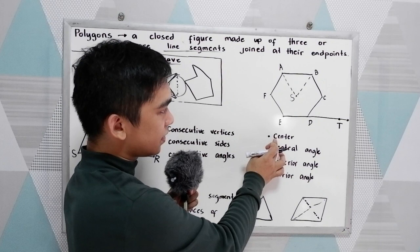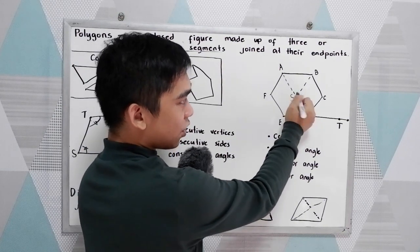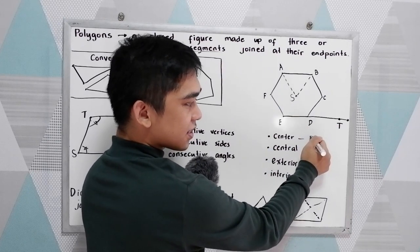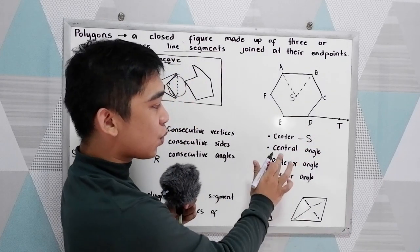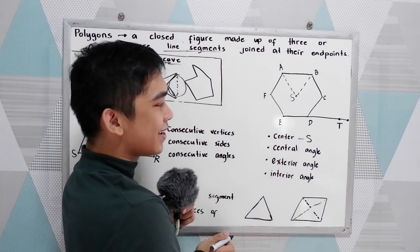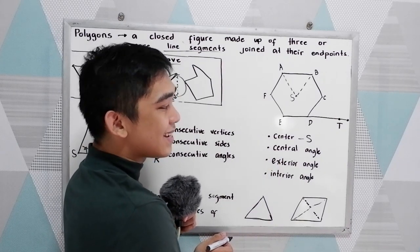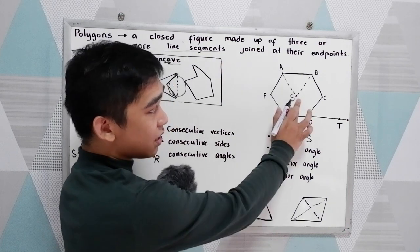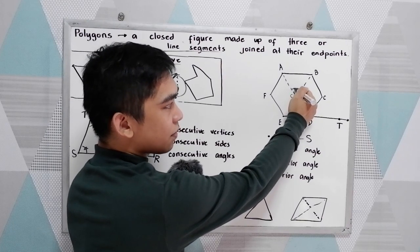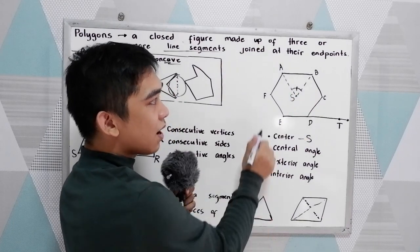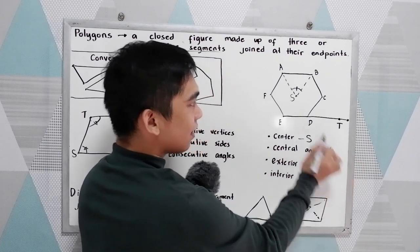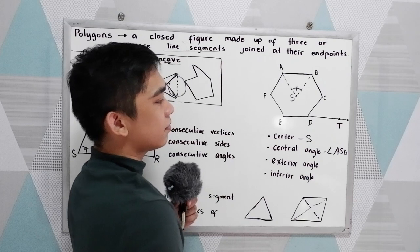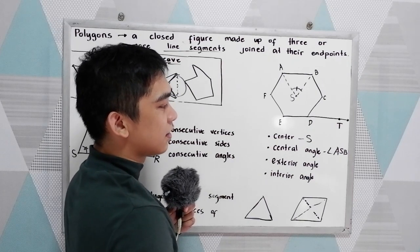When we say center, it is a point at the center of our polygon. In this case, our center is S. When we say central angle, it is an angle located at the center of the polygon. In this case, the central angle is angle ASB.